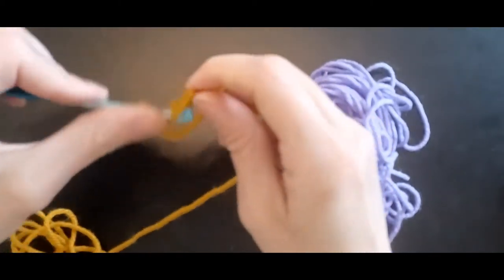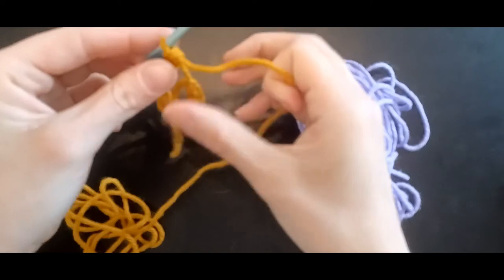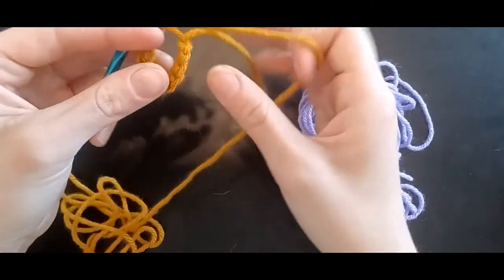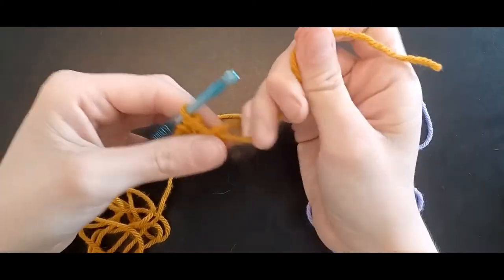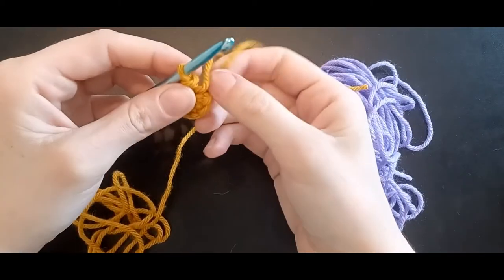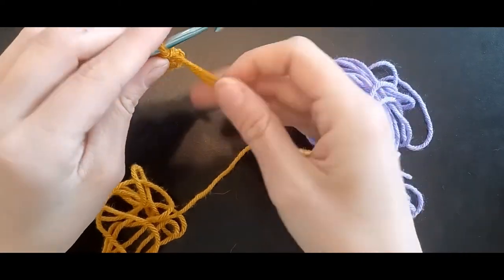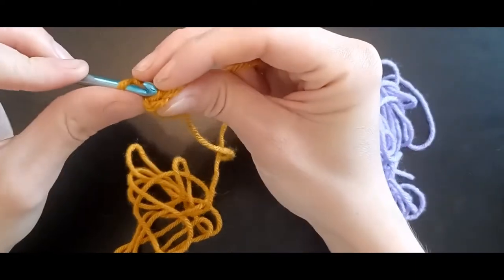And nine. So including your chain you have ten. Pull that tail tight, slip to the top of your chain. Stick it right through the V, yarn over, go through.